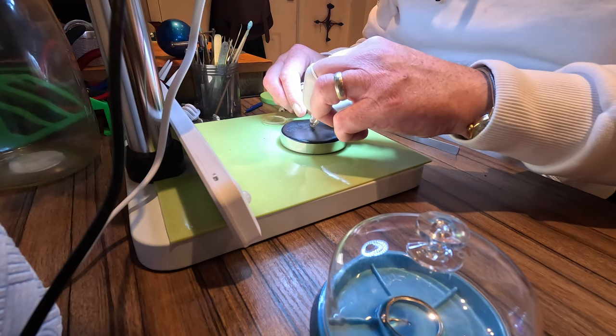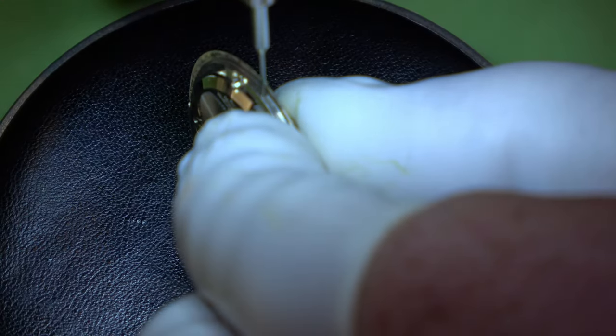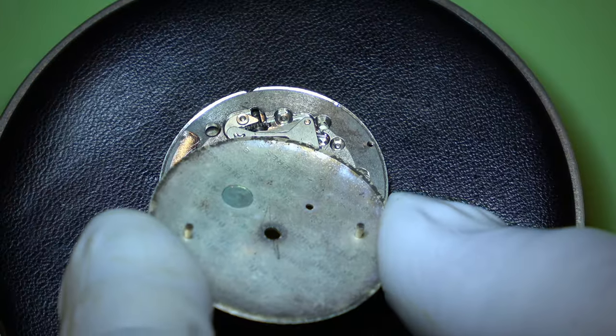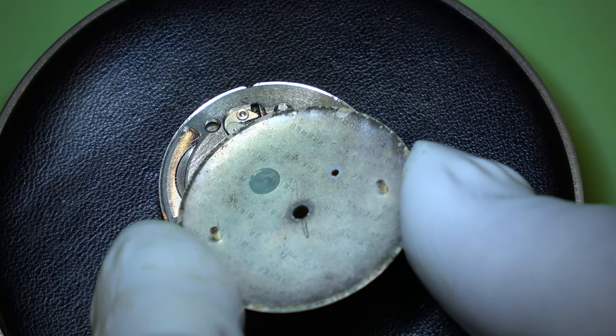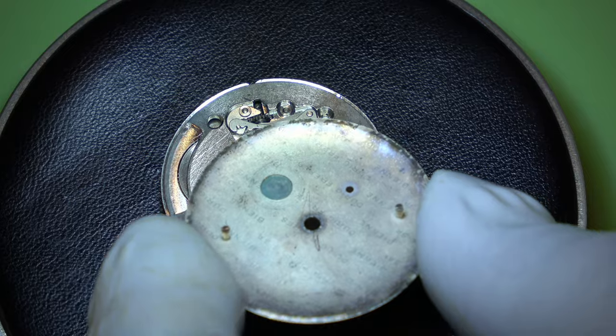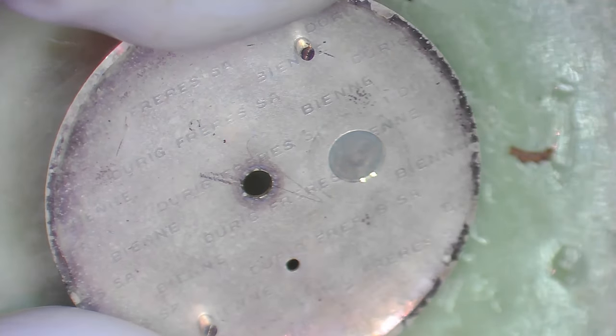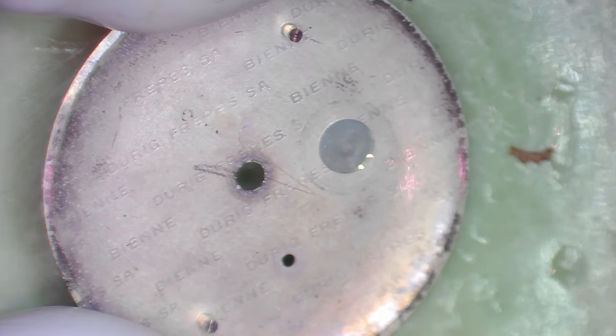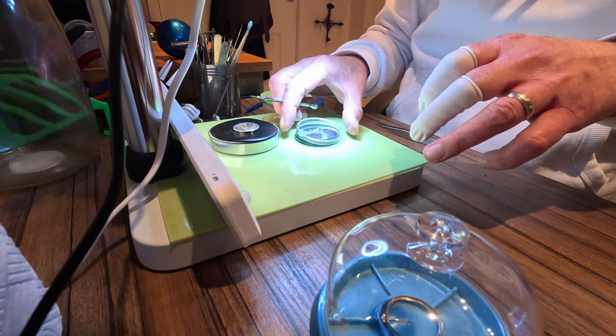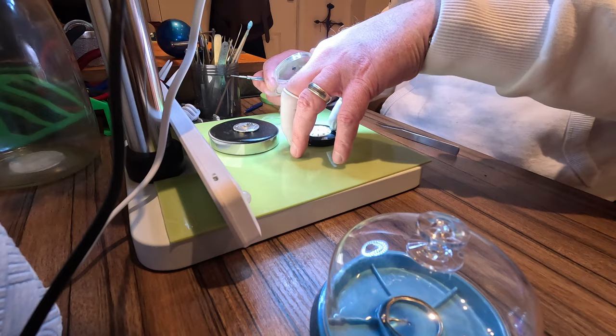We are going to take it off now. On this movement there are two screws on the side there. Just loosen them off and the dial comes away. Again I have not seen anything like that on the back of a dial before so it is all new to me.